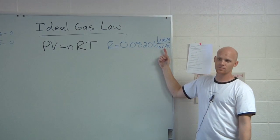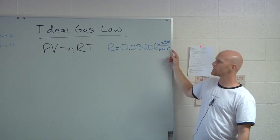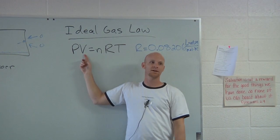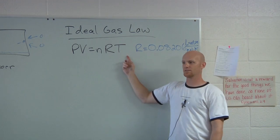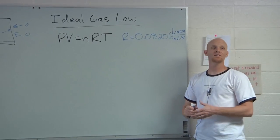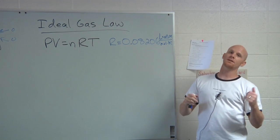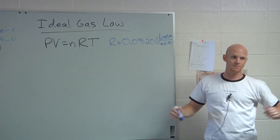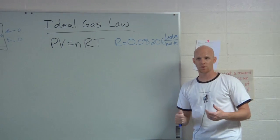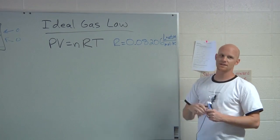If you use the standard value of R, then you have to use specific units: pressure in atmospheres, volume in liters, and temperature in Kelvin. If you're using delta T, it doesn't really matter if you use Celsius or Kelvin, but for just about everywhere else in chemistry when using temperature, you must use Kelvin. Always do any calculations involving temperature in Kelvin.